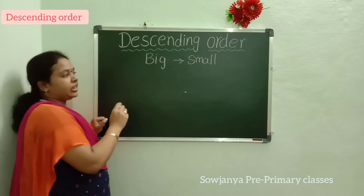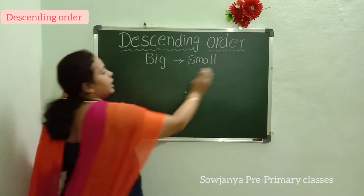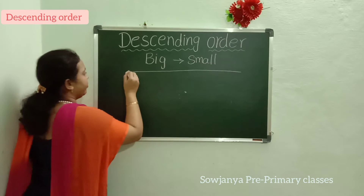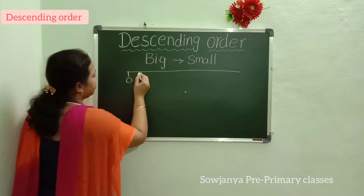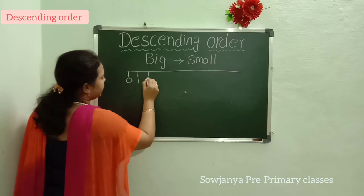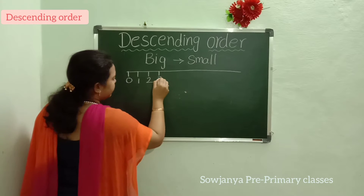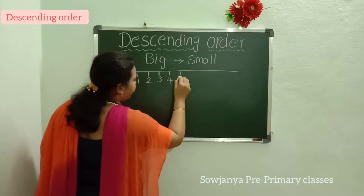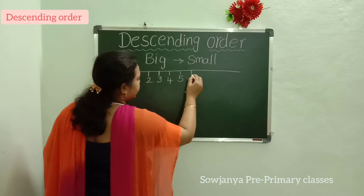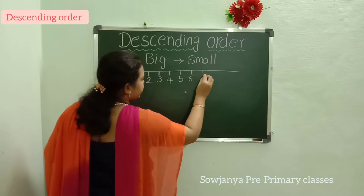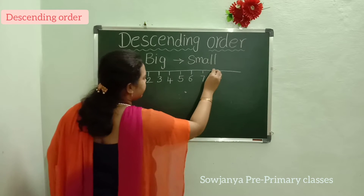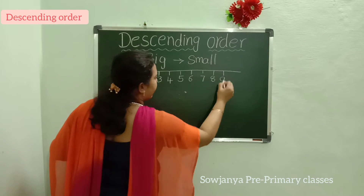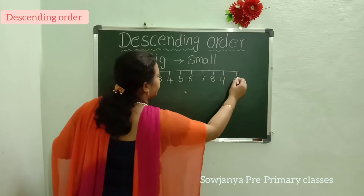Now, we'll draw the number line first. 0, 1, 2, 3, 4, 5, 6, 7, 8, 9, 10.